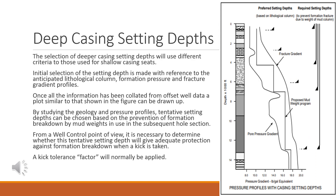Deep casing setting depths. The selection of deeper casing setting depths will use different criteria to those used for shallow casing seats. Initial selection of the setting depth is made with reference to the anticipated lithological column, formation pressure, and fracture gradient profiles. Once all the information has been collated from offset well data, a plot similar to that shown in the figure can be drawn up. By studying the geology and pressure profiles, tentative setting depths can be chosen based on the prevention of formation breakdown by mud weights in use in the subsequent hole section.